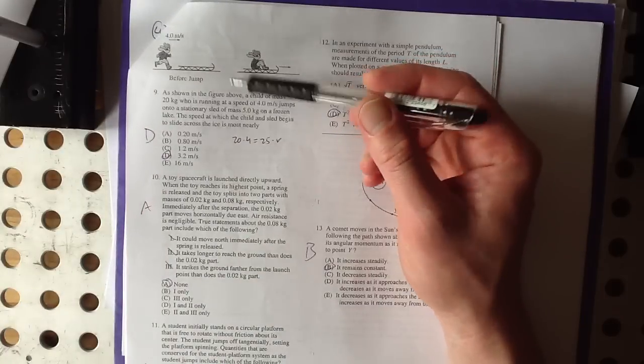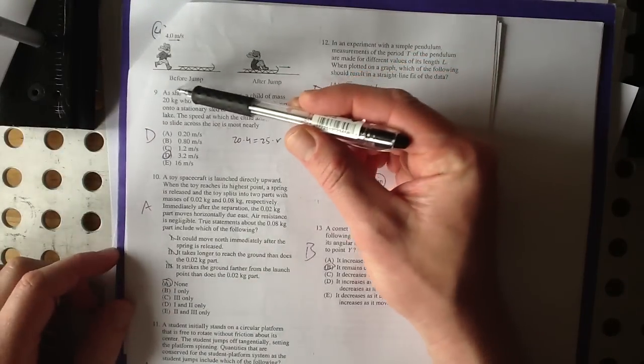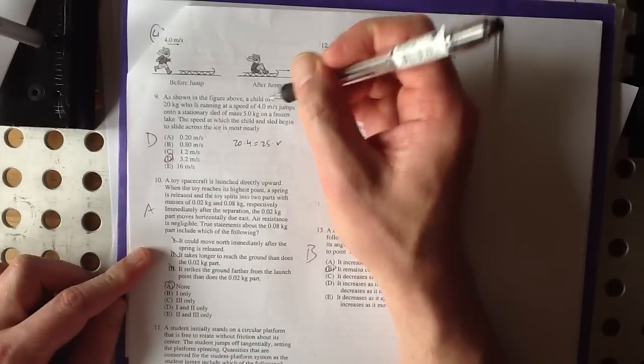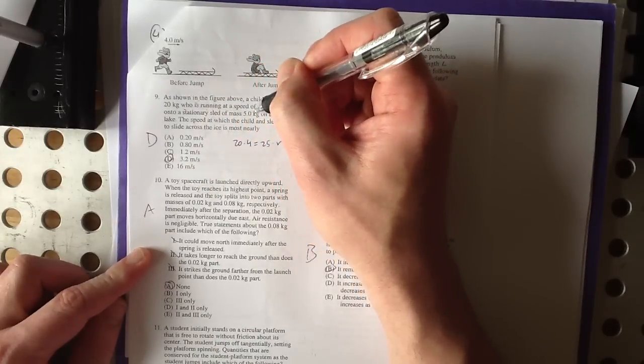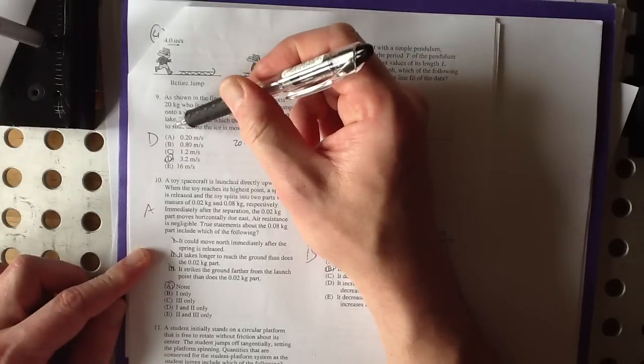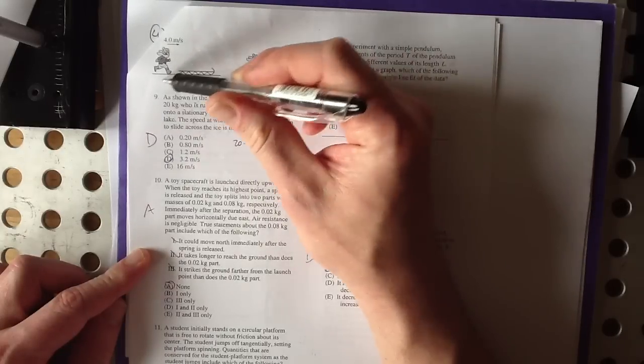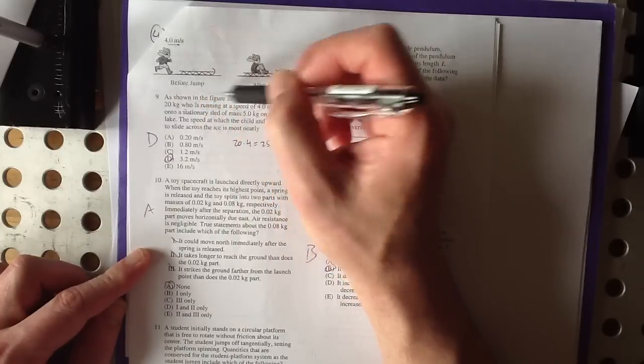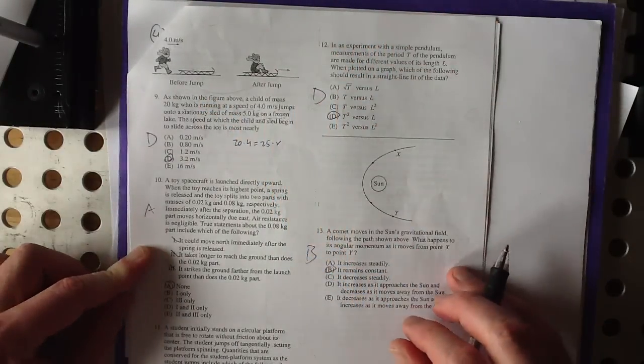Here we have, as shown in the figure above, a child of mass 20 kilograms is running at a speed of 4 meters per second, jumps onto a stationary sled of mass 5 kilograms on a frozen lake. The speed at which the child and sled begin to slide across the ice is most nearly. Well, this is a collision of types, of sorts.